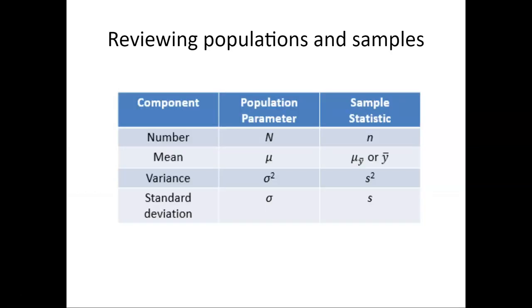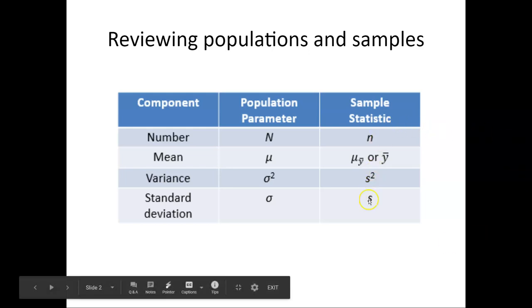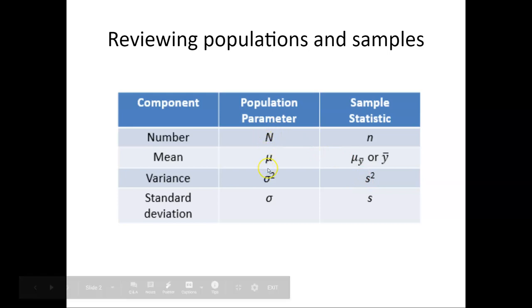So a little bit about reviewing populations and samples. Remember we use different notation to decipher what we mean by the sample versus the population. For samples we typically use letters like n and s. For populations we tend to use Greek letters like mu and sigma. And so here the number of observations for the population might be capital N, lowercase n for the sample.